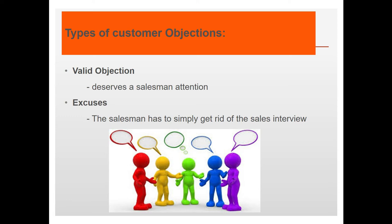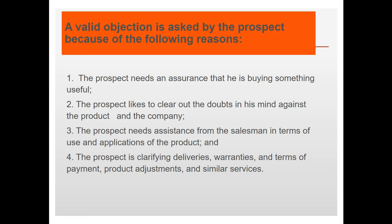There are two types of objections: valid objections and excuses. A valid objection definitely deserves the salesman's attention. An excuse means the salesman has to simply end the sales interview. Whether the objection is valid or not, the salesman has to be prepared. Valid objections are asked because prospects need reassurance, want to clear doubts, need assistance with the product, or want to clarify deliveries, warranties, terms of payment, product adjustments, and similar services.